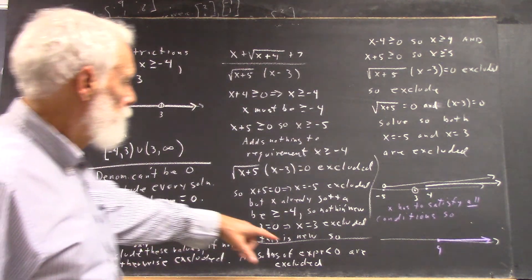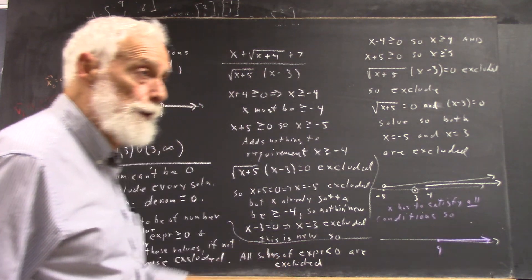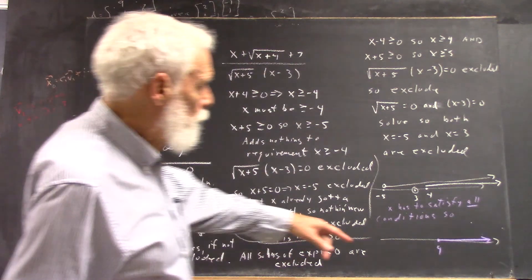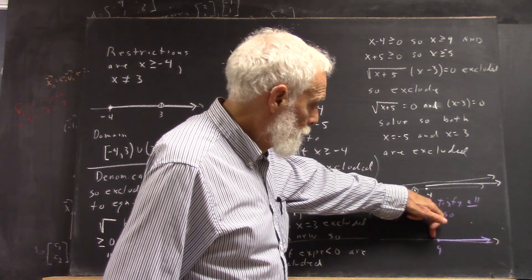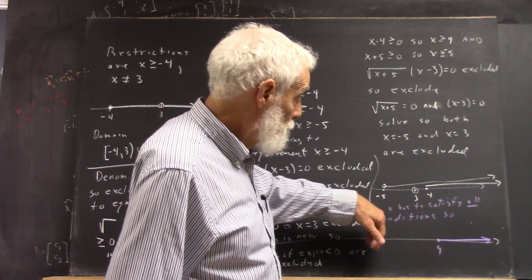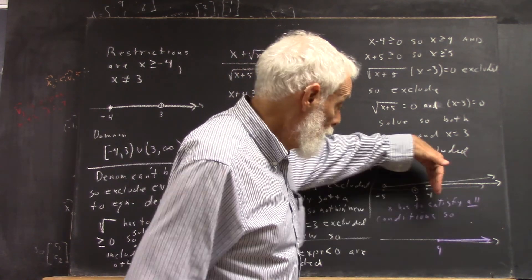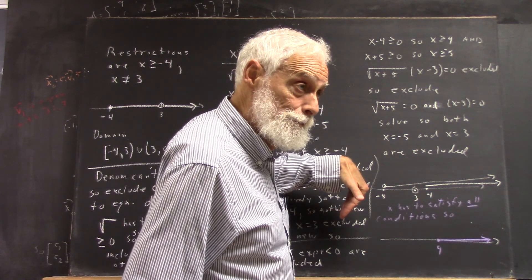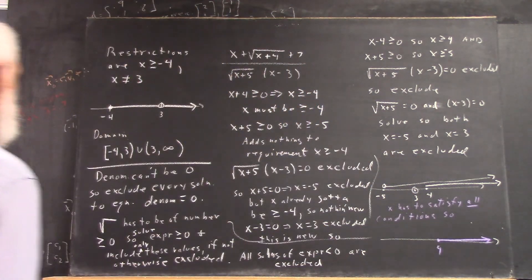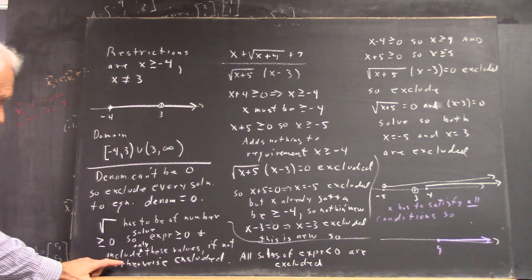All solutions where the expression is less than zero have to be excluded. So for example, over here, the reason nothing to the left of four was included was because all the values that don't satisfy that have to be thrown out, which would include all these values anyway. So another way, I added a word here that I should have included.